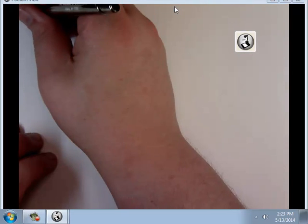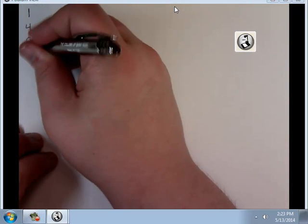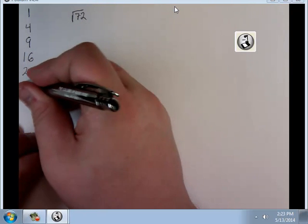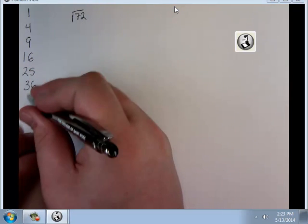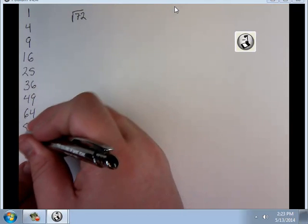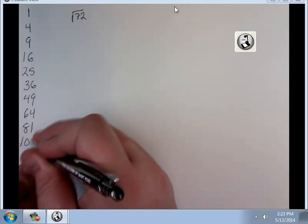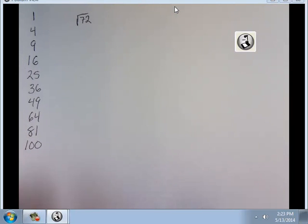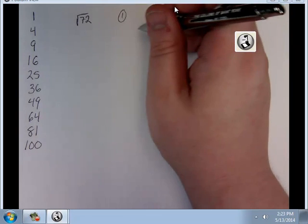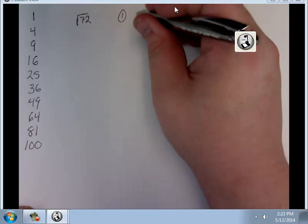How could we break that down? Anytime you see that square root sign, if it would help you out, off to the side of your paper, I would recommend you write 1 through 10 squared. So let's do that. 1, 4, 9, 16, 25, 36, 49, 64, 81, 100.